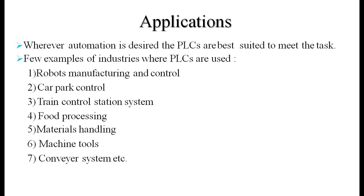Applications: wherever automation is desired, PLCs are the best suited to meet the task. Examples of industries where PLCs are used include robot manufacturing and control, car park control, train control station systems, food processing, material handling, machine tools, and conveyor systems. There are many more applications — in any automation, a PLC is the best and most possible solution. Thank you.